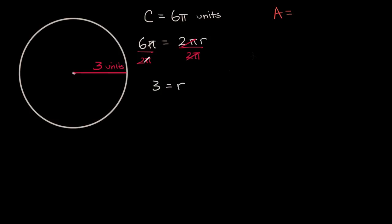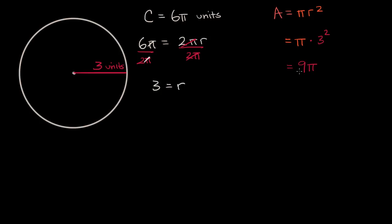And then we can use the fact that area is equal to pi r squared to figure out the area. This is going to be equal to pi times three squared, which is of course going to be equal to nine pi. So for this particular example, when the circumference is six pi units, we're able to figure out that the area is actually going to be nine pi square units, or units squared.